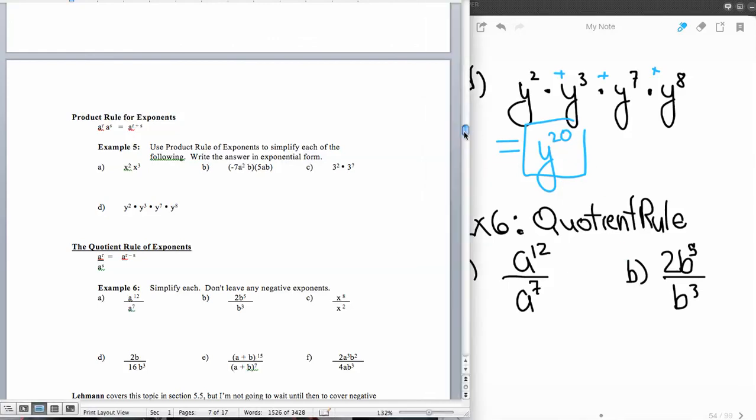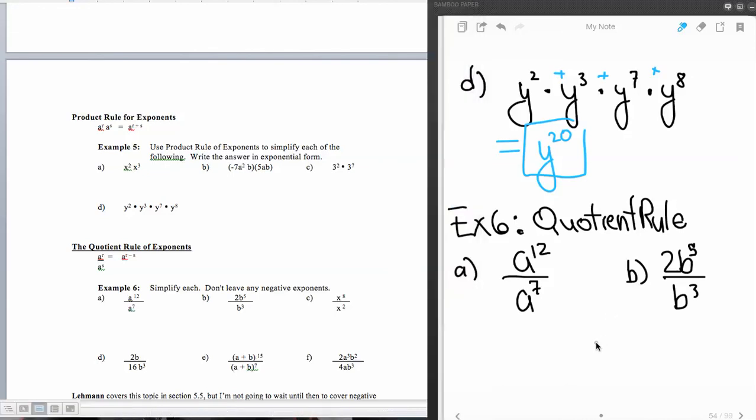Next is our quotient rule. Our quotient rule says that whenever we have like bases and we're dividing, we're going to take the numerator exponent and subtract the denominator exponent. So we'll simplify the following. So we see we have division of like bases, numerator minus denominator exponent a to the fifth power.